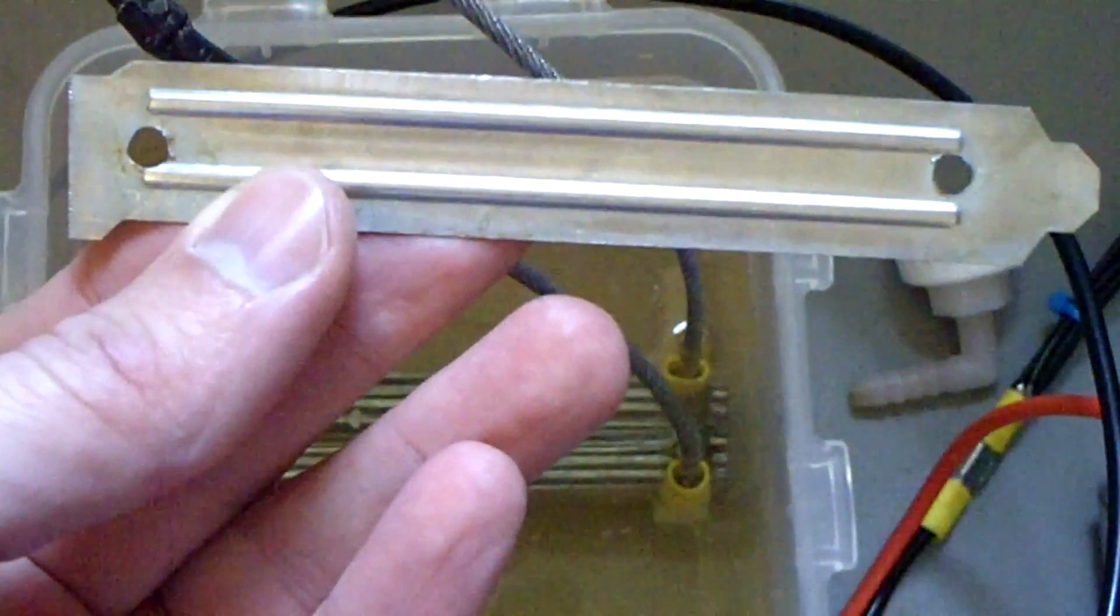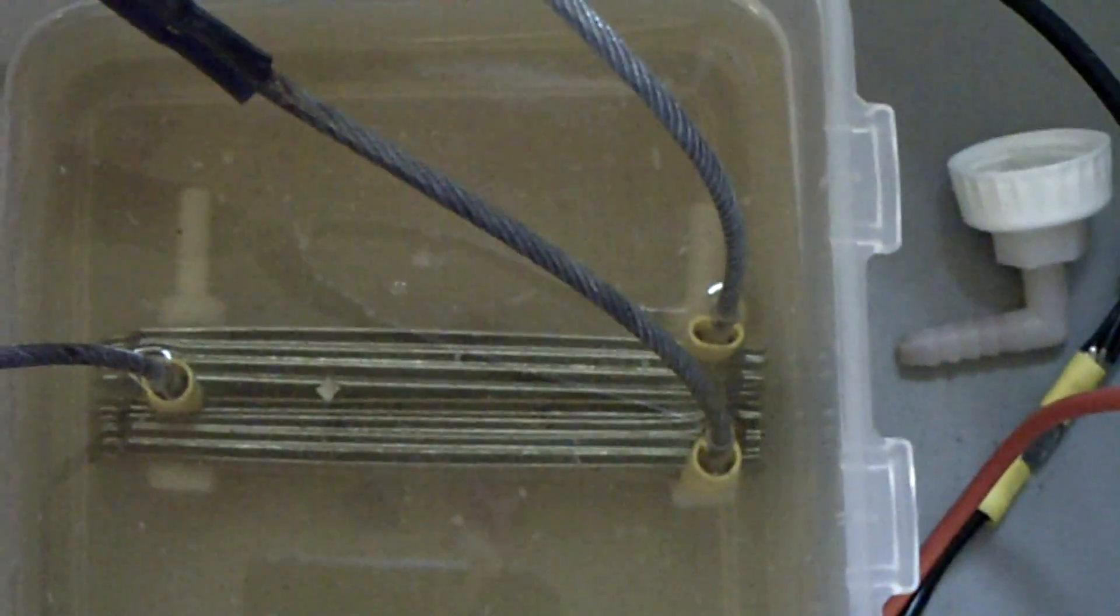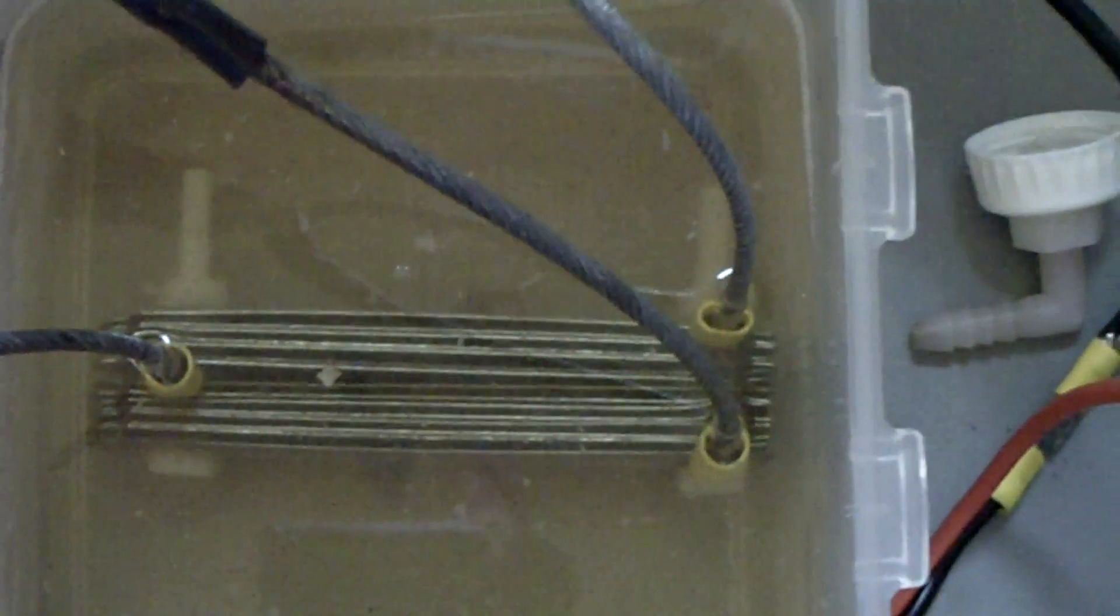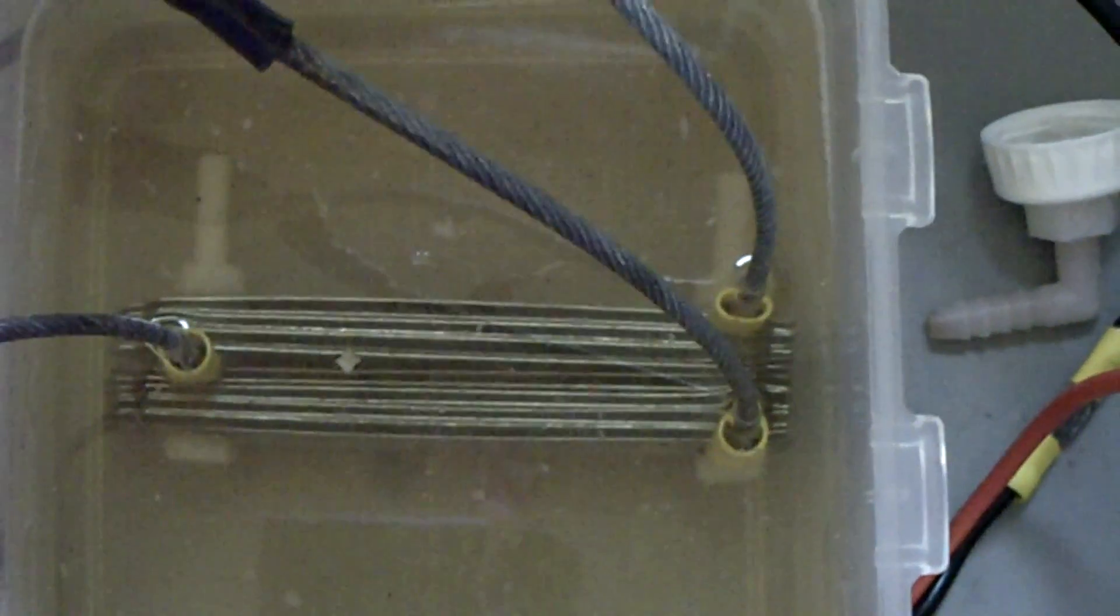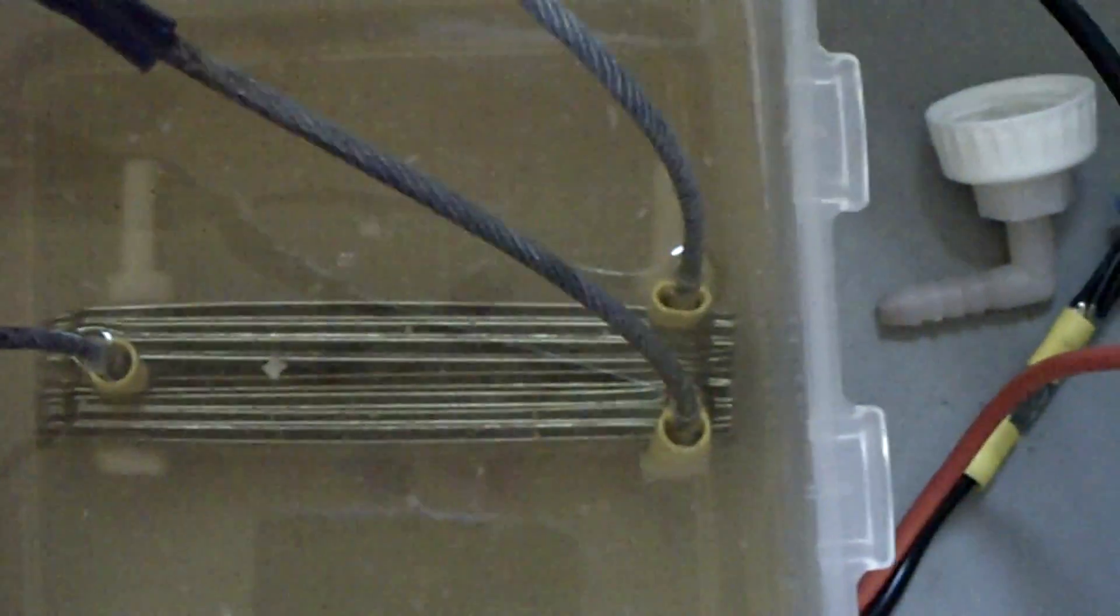Then I drilled out holes on either end and I put a nylon bolt and nut through the hole so that I can assemble a cell and I've got it set up where it's a negative on the outside and positive on the inside.